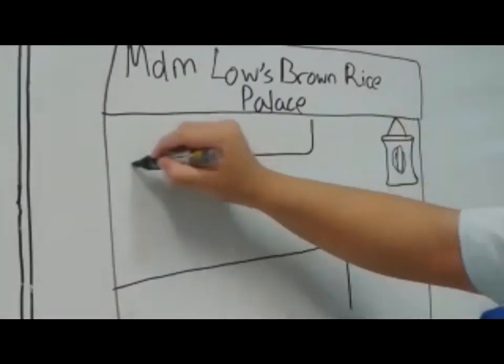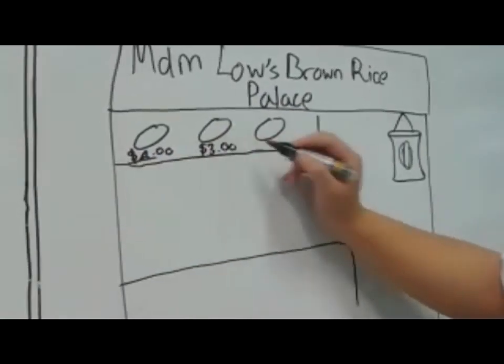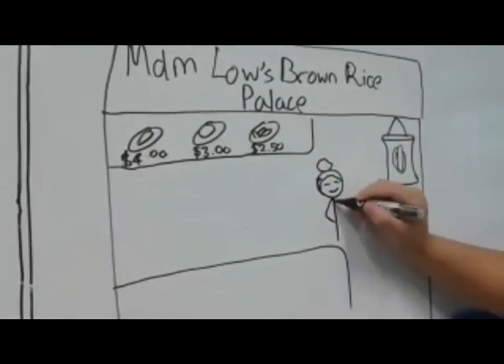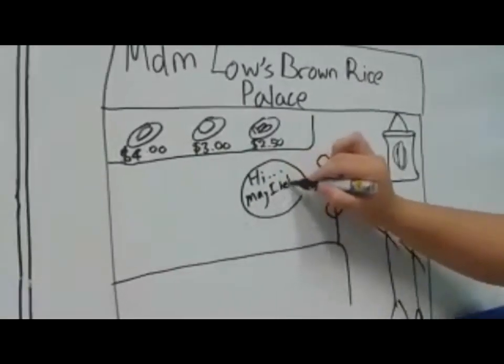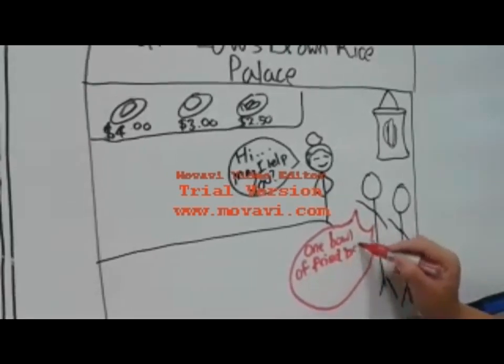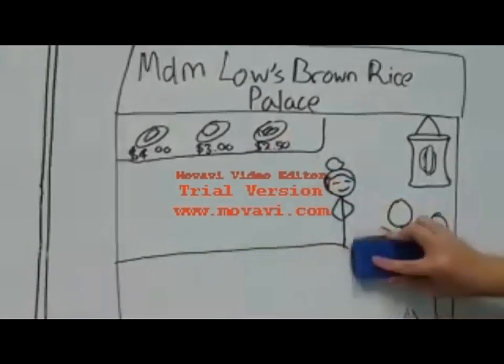There was a myriad of food options to choose from, such as brown rice with chicken for $4 and brown rice with fish for $3. Hi, may I help you? Madame Lowe, the stall vendor, welcomed them. One bowl of fried brown rice, please, Jack and Bob ordered together.